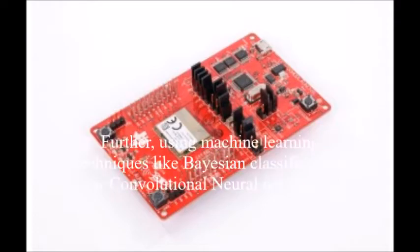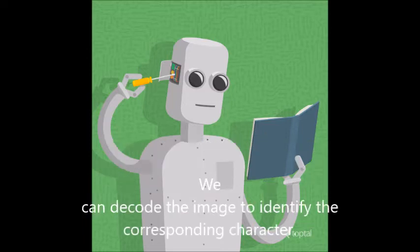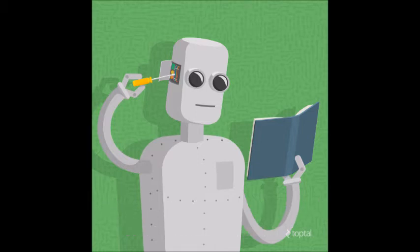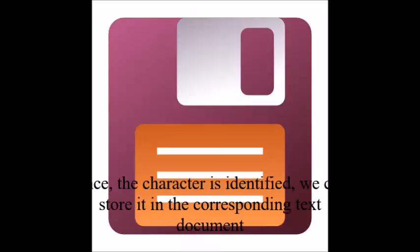Further, using machine learning techniques like Bayesian classification or convolutional neural networks, we can decode the image to identify the corresponding character. Once the character is identified, we can store it in the corresponding text document.